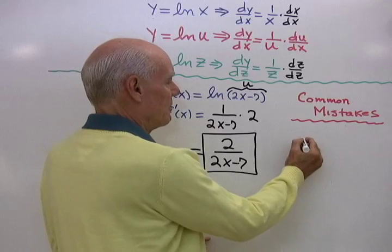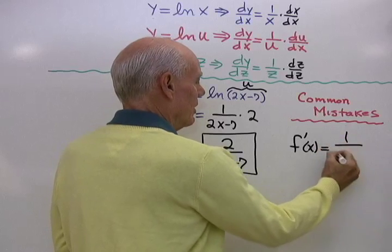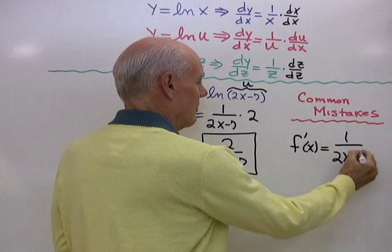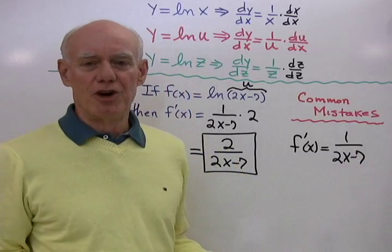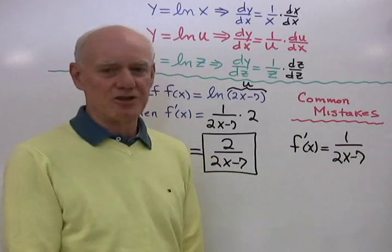First most common mistake would be this, f prime of x would be equal to 1 over 2x minus 7, and then no derivative of u with respect to x. So they leave out the second part, I don't see that 2.